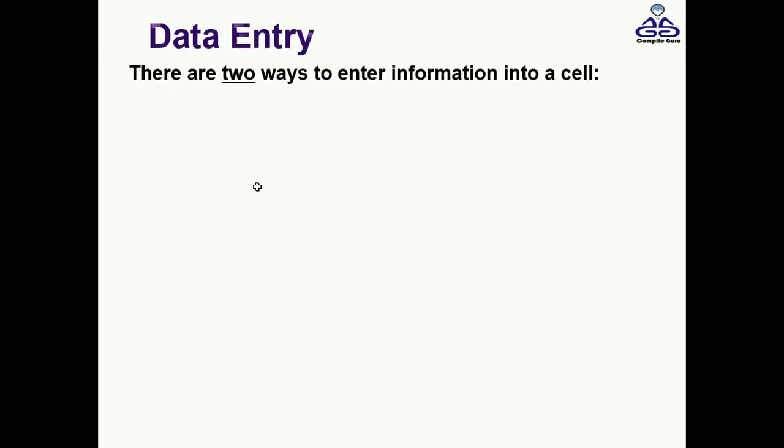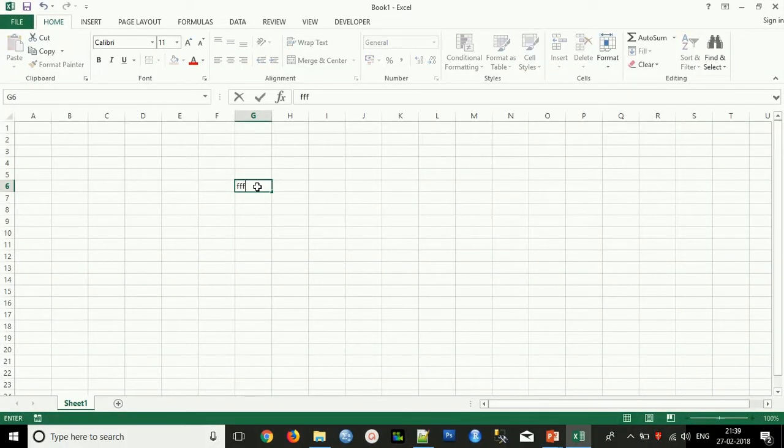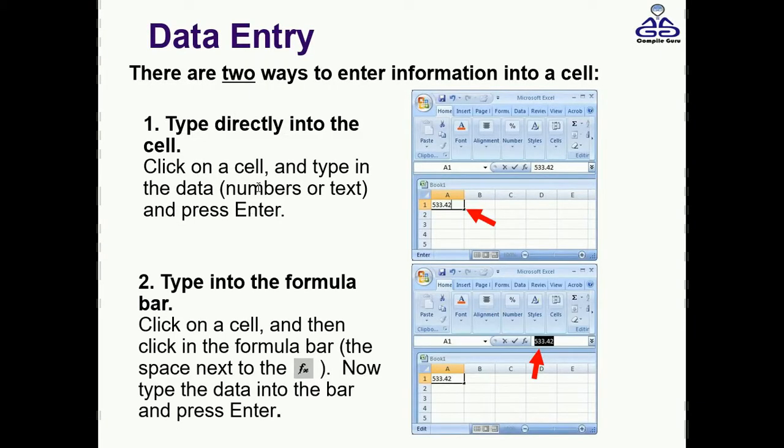into the cell. Click on a cell and type in the data, numbers or text. Simply you're just doing data entry. The second method is to type into the formula bar. Click on a cell, then click on the formula bar. This is the formula bar where you can put anything, any formula.